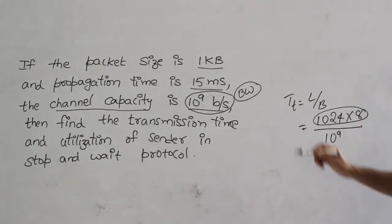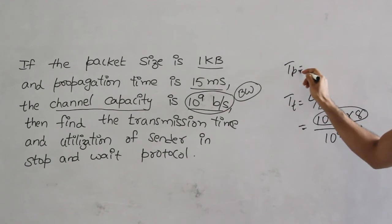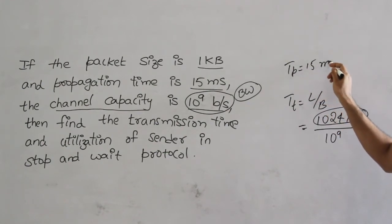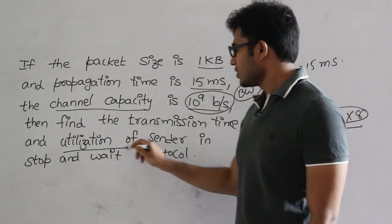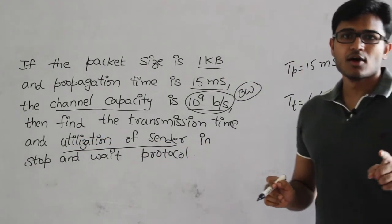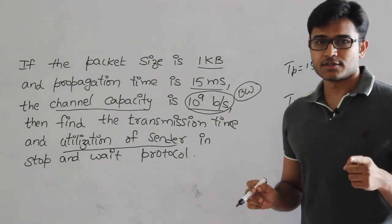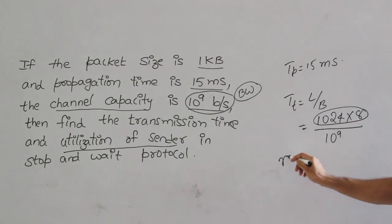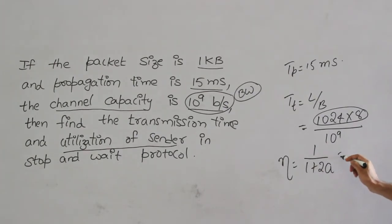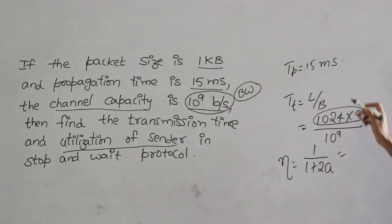And already Tp is given, right? So Tp is 15 milliseconds. And they are asking about what is the utilization of sender? I told you that utilization of sender or link utilization or efficiency, everything is same. Coming to stop and wait, everything comes down to efficiency equal to 1 upon 1 plus 2a.